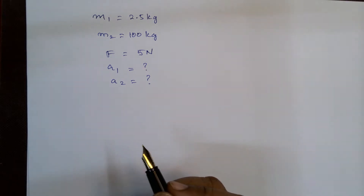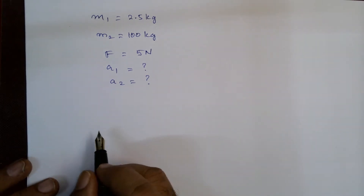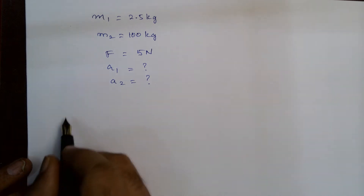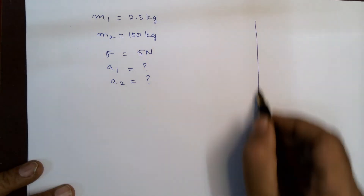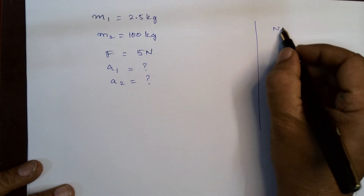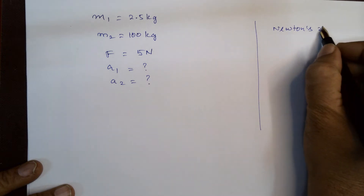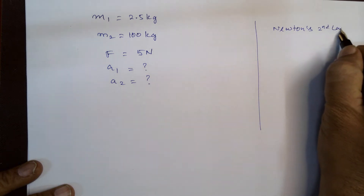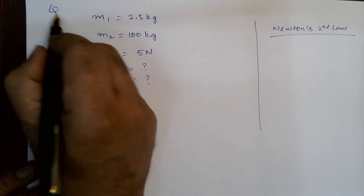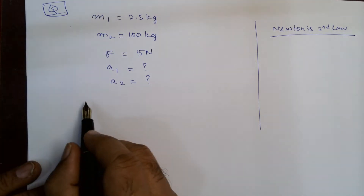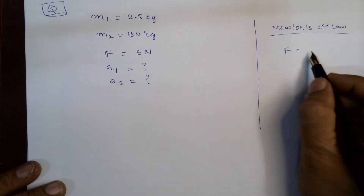From this, you will be able to understand one important concept based on this problem. Let us proceed. According to Newton's Second Law — the concept here — Newton's Second Law is F is equal to MA.